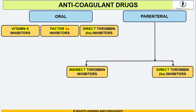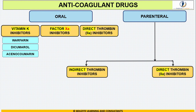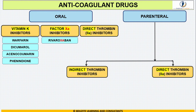Starting with the oral drugs: the Vitamin K inhibitors include coumarin derivatives such as warfarin, dicumarol, acenocoumarol, and phenindione. Next are the Factor 10a inhibitors; the drugs in this category include rivaroxaban and apixaban. Something unique here: the Factor 10a inhibitors have 'xa' in their names, so whenever you see 'xa' in a drug name, immediately place it under Factor 10a inhibitors.